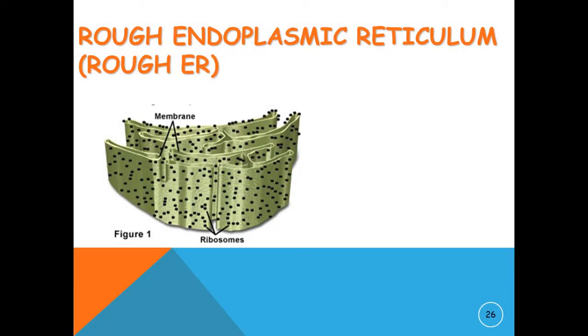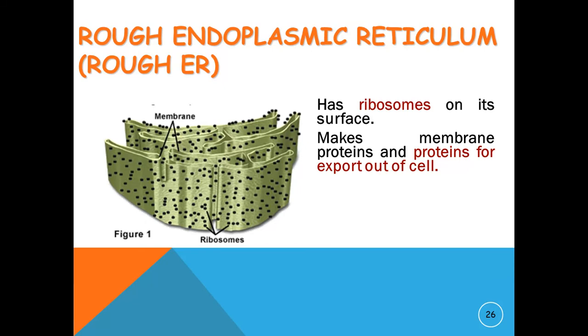Rough endoplasmic reticulum is an organelle found in eukaryotic cells. Its main function is to produce proteins. It is made up of cisternae, tubules, and vesicles. The cisternae are made up of flattened membrane ducts which are involved in the modification of proteins.